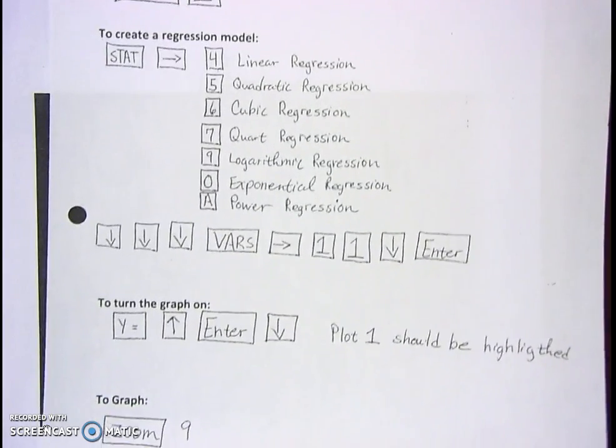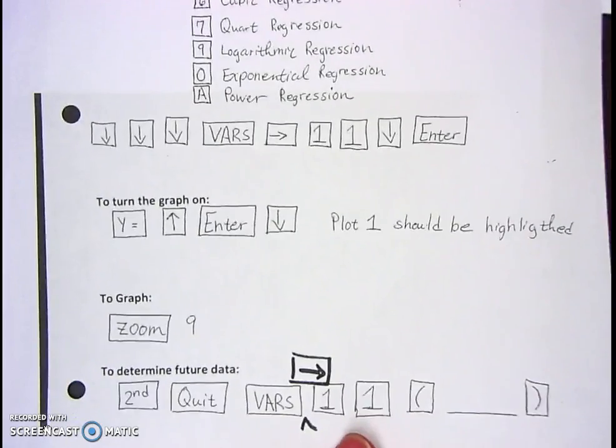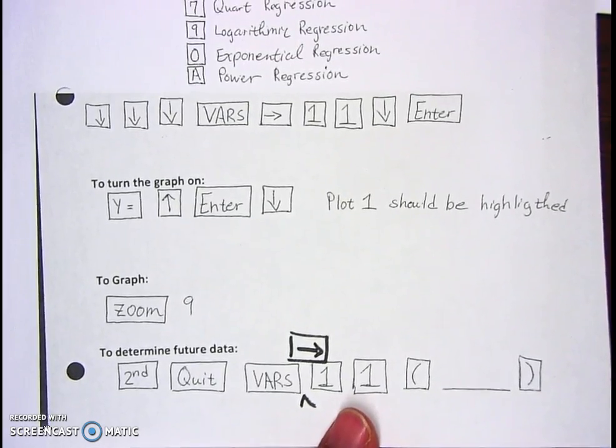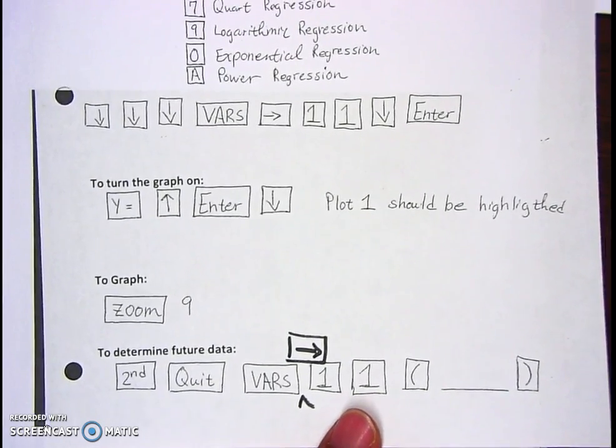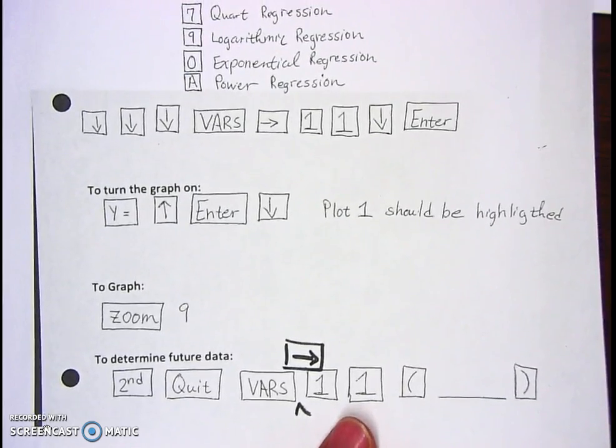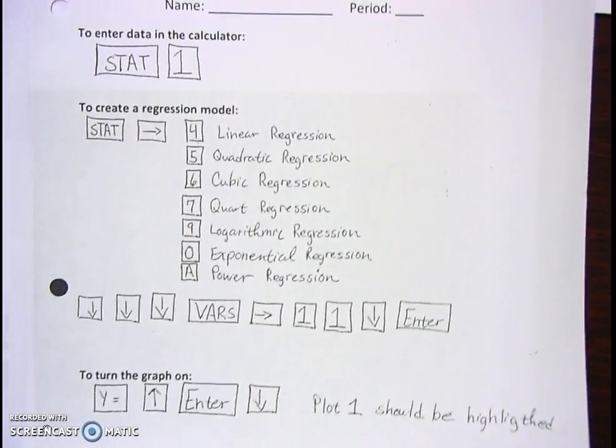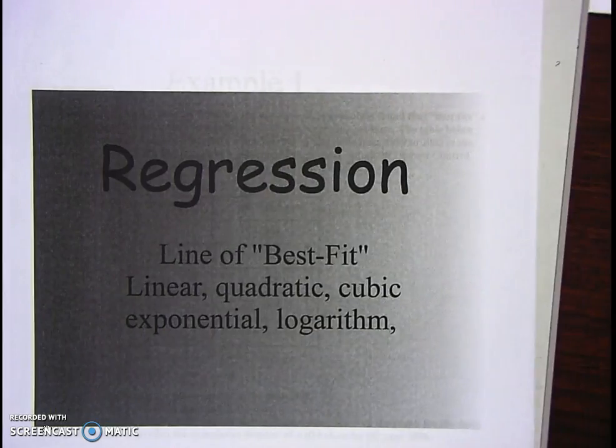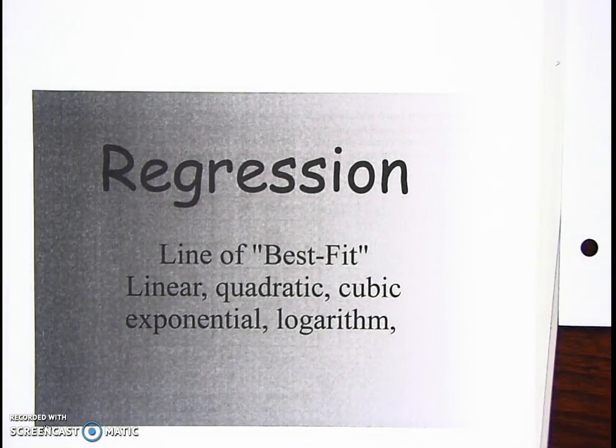You should have this form and the keystrokes on the page I'm giving each one of you. This is in your notes to go back to if you ever forget how to hit the buttons. I gave you every single keystroke that you need right here, so make sure that you keep this keystroke page and know how to use it.